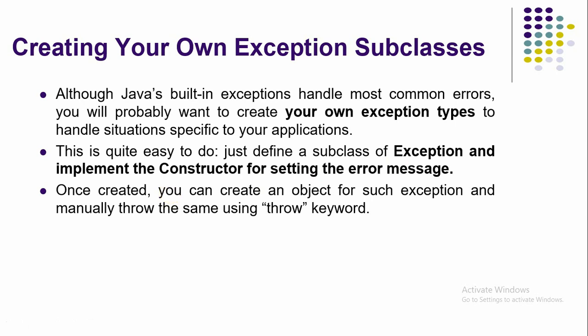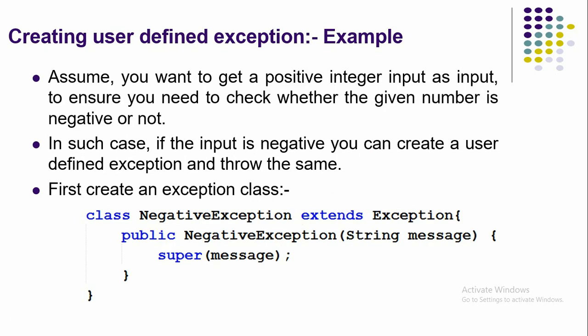For example, it can be InvalidNumber, InvalidAge, or InvalidName based on the user input. You choose a name for the exception and create a class by extending the predefined class called Exception. Then you implement the constructor for setting the error message. Once you create the class, wherever you want to generate the error you use the throw keyword, create one object for this class, and throw the exception. That exception then has to be handled using a try-catch block.